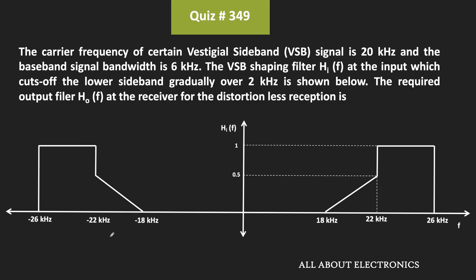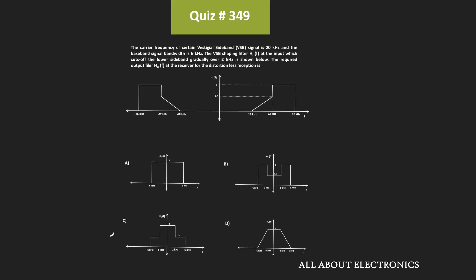Here we have been given the frequency response of the VSB shaping filter, and using this VSB shaping filter, some VSB signal is generated. We have been asked to find the required output filter at the receiver end such that we can recover the message signal without any kind of distortion. We have been given four options.